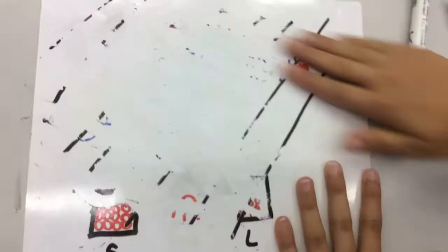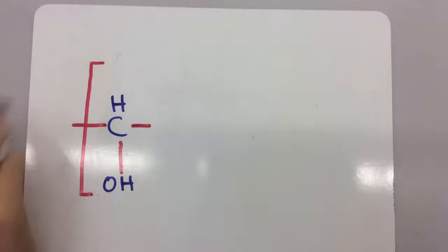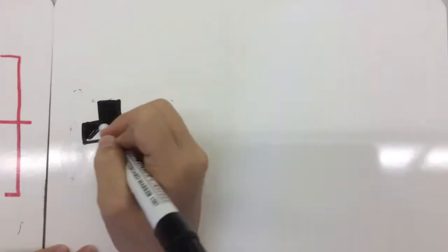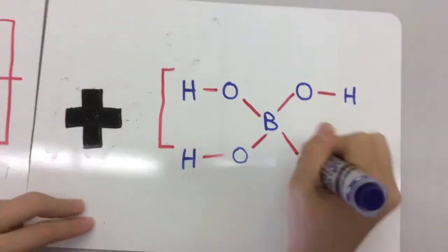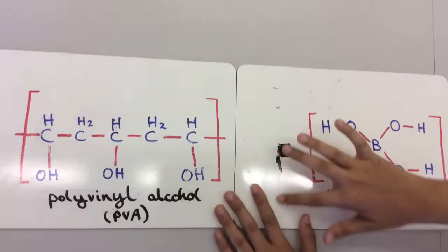A polymer, which in our case is the PVA glue, is a large chain of molecules made up of smaller units that repeat themselves. When added to boric acid, which again in our case is eye contact solution, it makes slime.